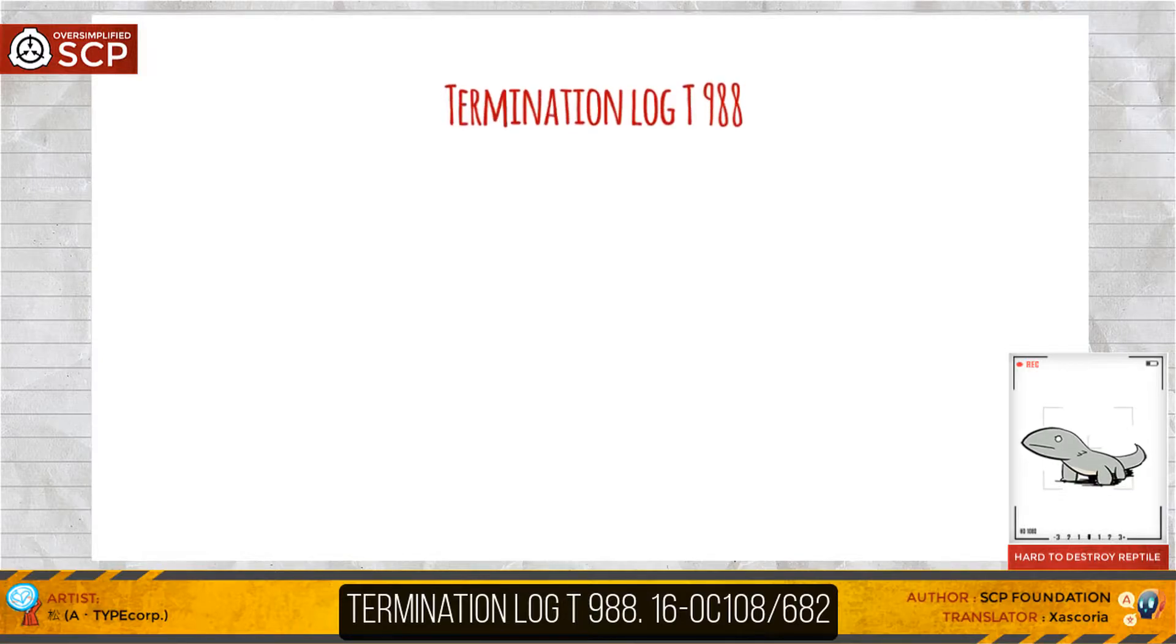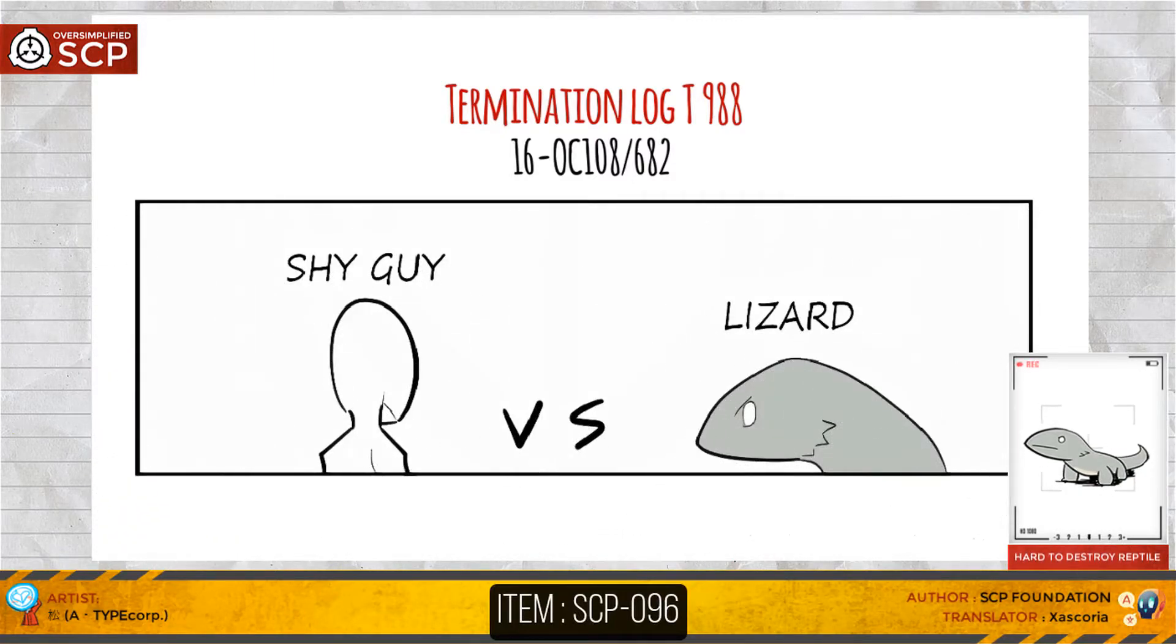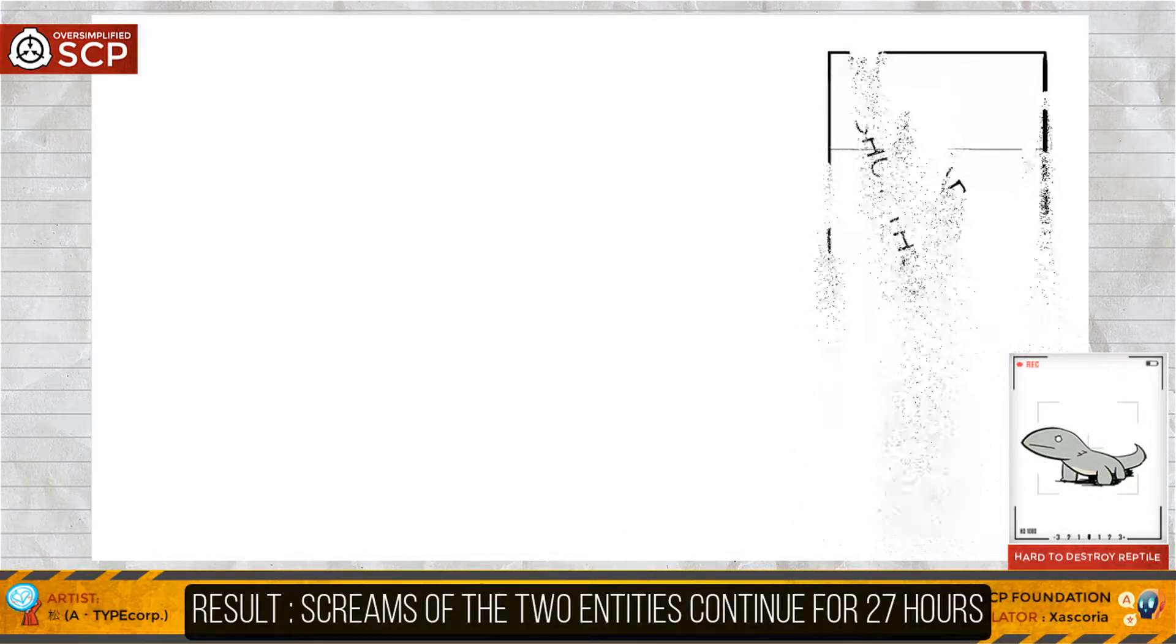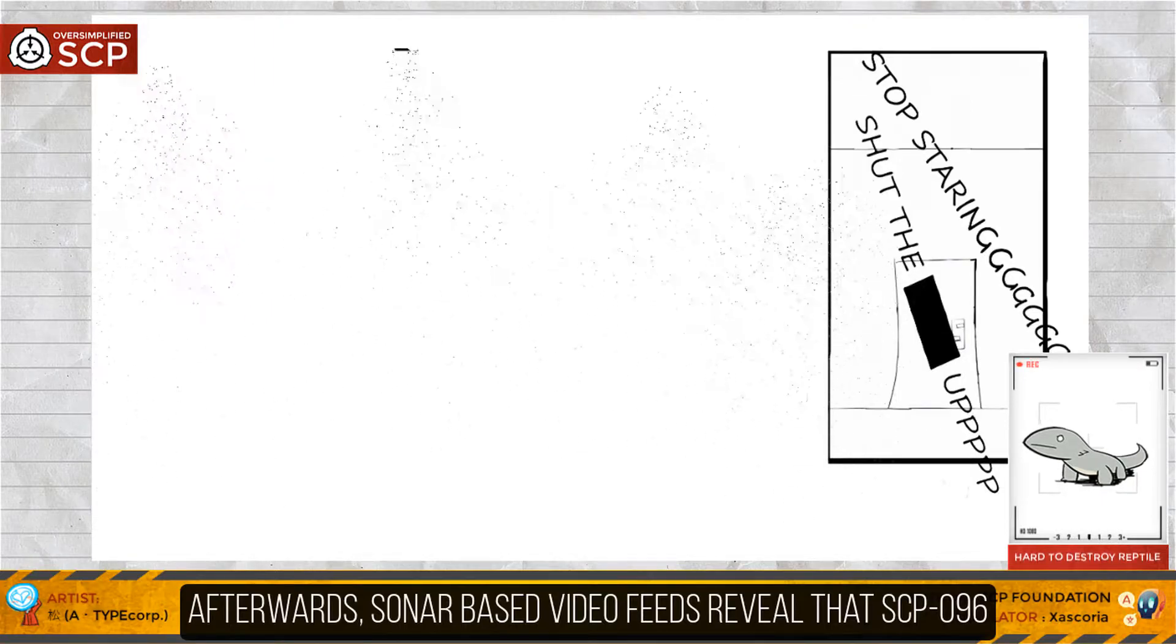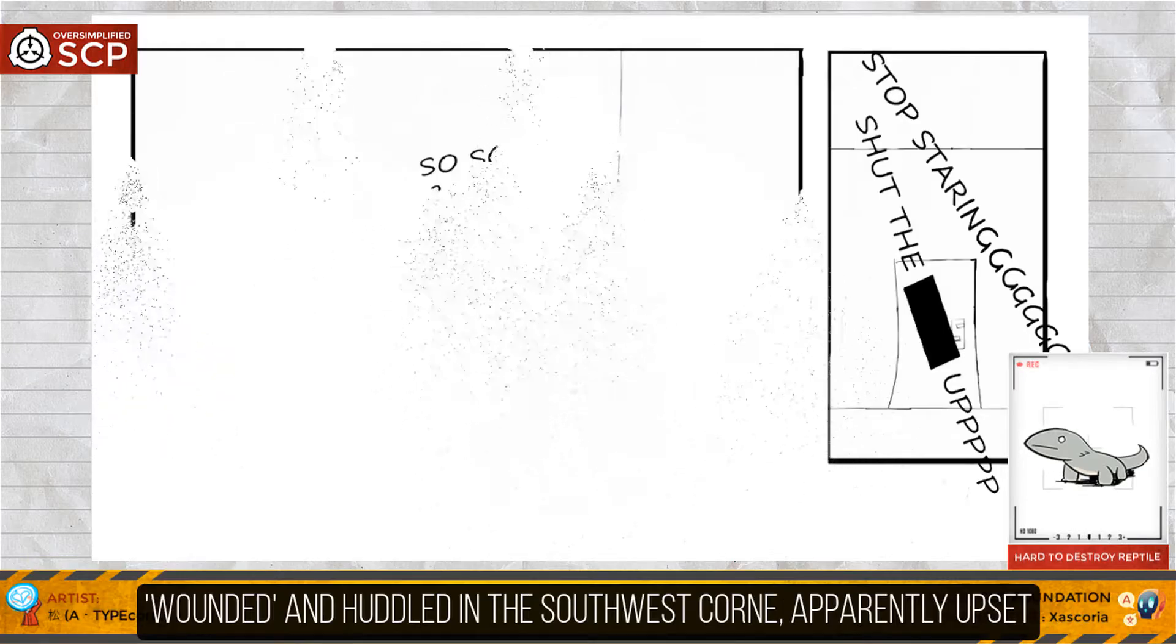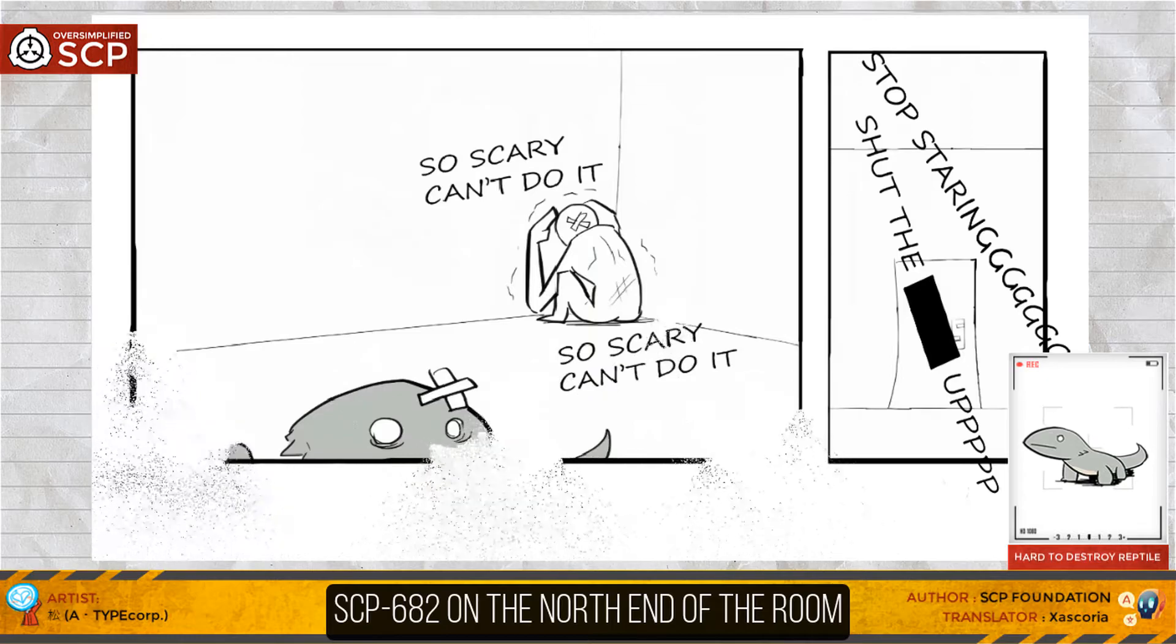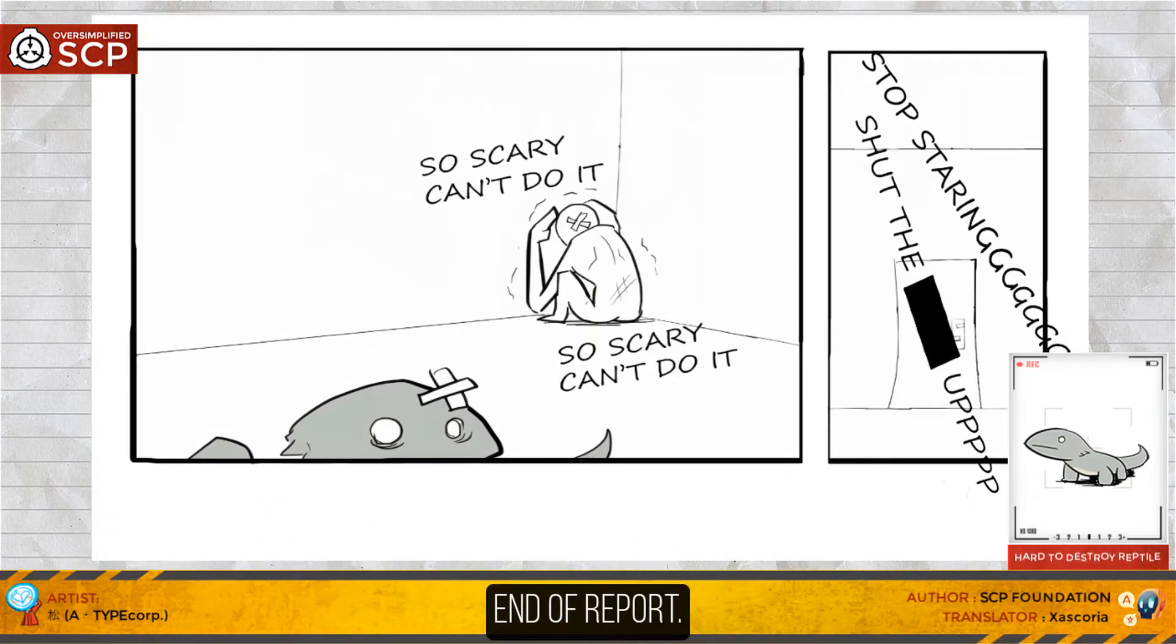Termination Log E-988-16-0-C-108-682. Item: SCP-096. Result: Screams of the two entities continue for 27 hours. Afterwards, sonar-based video feeds reveal that SCP-096 is severely wounded and huddled in the southwest corner, apparently upset. SCP-682 is on the north end of the room, torn to pieces, but still alive. End of report.